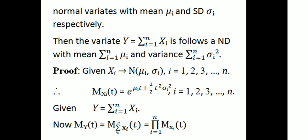The mean is summation μi and variance is summation σi squared. If we have different random variables following normal distribution, we can use the moment generating function approach. Proof: Given Xi follows normal distribution with μi and σi, where i = 1, 2, 3, ..., n.